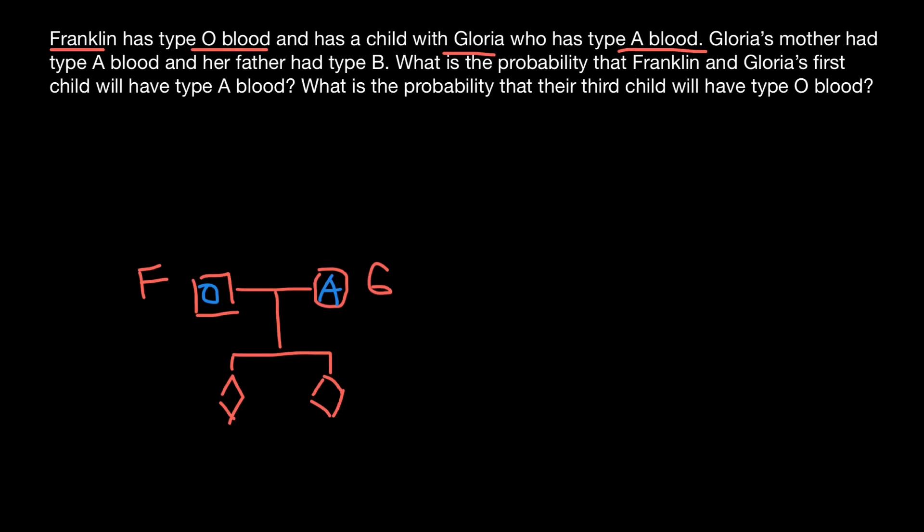But what we also know, we know that Gloria's mother had blood type A. So Gloria had parents, mother and father. And her mother's blood type was A. And her father had blood type B. What does it tell us about the genotype of Gloria?